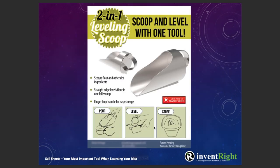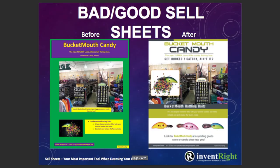Another one: the two-in-one leveling scoop. 'Scoop and level with one tool.' It scoops flour and other dry ingredients; the straight edge levels flour in one fell swoop; finger loop handle for easy storage. But you're not going to put 'finger loop handle for easy storage' up in your main benefit statement — 'Scoop and level with one tool.' You include other benefits and features as bullet points. This one has a storyboard, but you don't have to — a lot of products just have one picture and you're good.